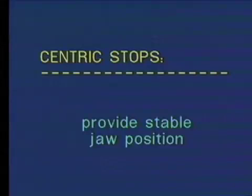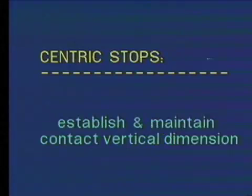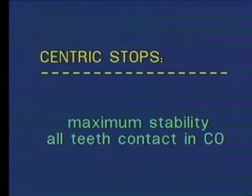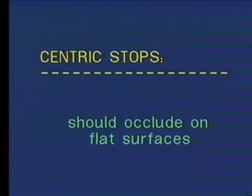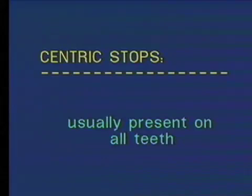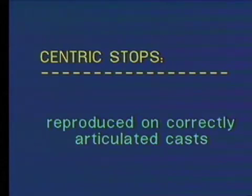Centric stops are important for providing a stable jaw position with the teeth in occlusion. Centric stops also establish and maintain contact vertical dimension. For maximum stability, all the teeth should contact in centric occlusion. Also, the supporting cusp tips should occlude on flat surfaces rather than inclined planes. Centric stops are usually present on all the teeth and can be reproduced on correctly articulated casts.